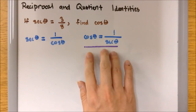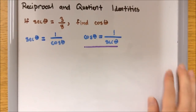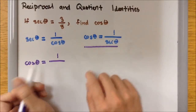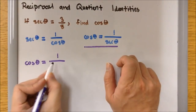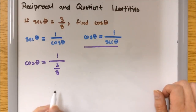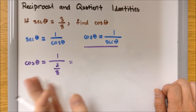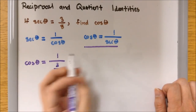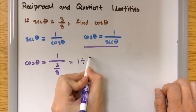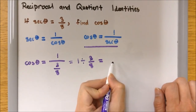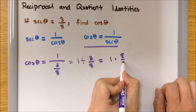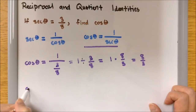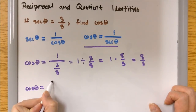So all we have to do is follow this rule. I'm going to write cosine theta equals 1 on top, and then put secant theta — which is 3 over 8 — as the denominator. We have a numerator divided by a fraction, so I rewrite it as a division: 1 divided by 3 over 8, then as multiplication: 1 times 8 over 3, which is simply 8 over 3.